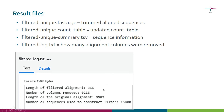For example, in my example, the original alignment had 9,582 columns. When we removed the gap columns and the overhangs, we removed 9,216 columns, so now we are left with 366 columns in this filtered alignment.